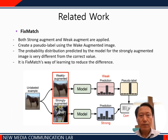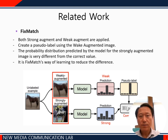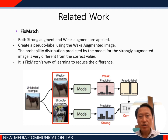And finally, let's look at the FixMatch method. Both strong augmentation and weak augmentation are applied. FixMatch creates a pseudo-label using the weak augment image, and the probability distribution predicted by the model on the strong augment image is compared to the correct value. It is a FixMatch approach aimed at reducing this difference.